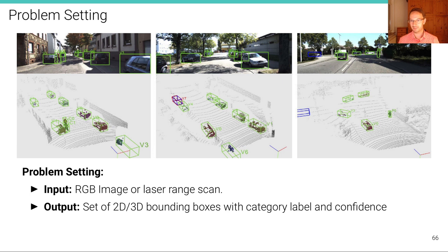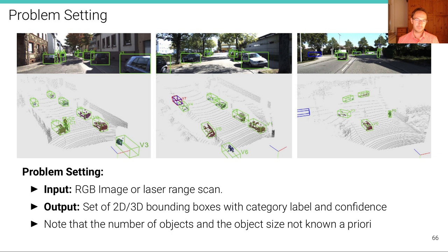Here's an example of 3D detections. Instead of 2D bounding boxes, we are now predicting 3D bounding boxes in point clouds. In both the 2D and 3D cases, note that the number of objects and the object size are not known a priori. So it's really a complicated output space — a structured prediction problem where even the number of output variables is not known a priori.